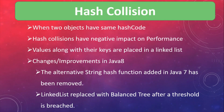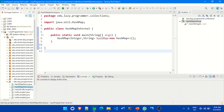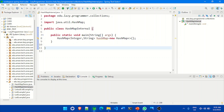Java 8 addressed high collision performance with two improvements. First, the alternate string hash function added in Java 7 was removed. Second, and most importantly, buckets containing a large number of colliding keys will store their entries in a balanced tree instead of a linked list. Now let's see how HashMap internally works by checking the source code in an IDE.